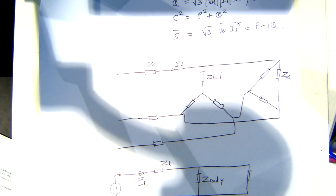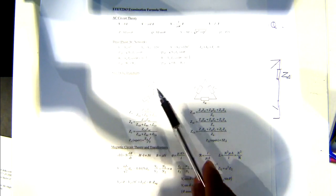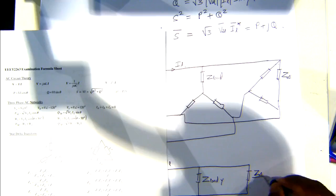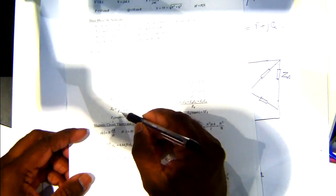If you look at the formula sheet, you'll have certain information provided. You have the star-connected load and the delta-connected load, and the star-delta transformation — you can figure that out from this information. The star equivalent will be the delta divided by three. So this will be Z_delta divided by three — from this relationship here.